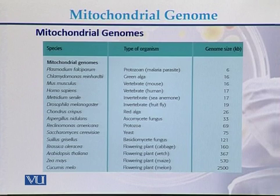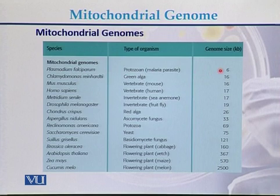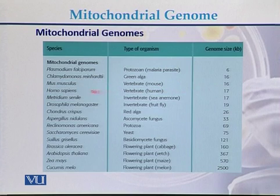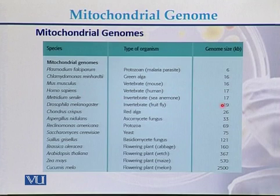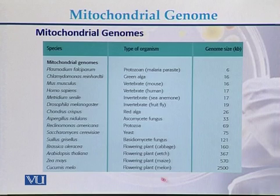This is a comparison of mitochondrial genomes across different species, showing the species name, type of organism, and genome size. For example, in Plasmodium the mitochondrial genome size is 6 Kb, in Mus musculus (mouse) it is 16 Kb, in Homo sapiens approximately 17 Kb, and in Drosophila (fruit fly) 19 Kb. The mitochondrial genome size can range from 6 Kb in Plasmodium up to 2500 Kb in melon.